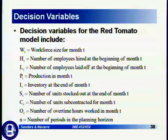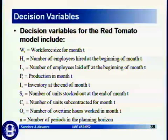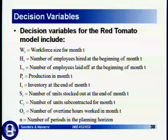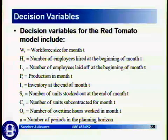Chopra uses the term 'laid off,' so firing is L_T for laid off. The amount of production is P_T, the inventory at the end of the month is I_T, and the number of units stocked out is S_T. In NAMIAS, S_T referred to subcontracting, so now subcontracting is C_T — the number of units subcontracted for the month. Overtime hours worked in the month is O_T, and N is the number of periods in the planning horizon.